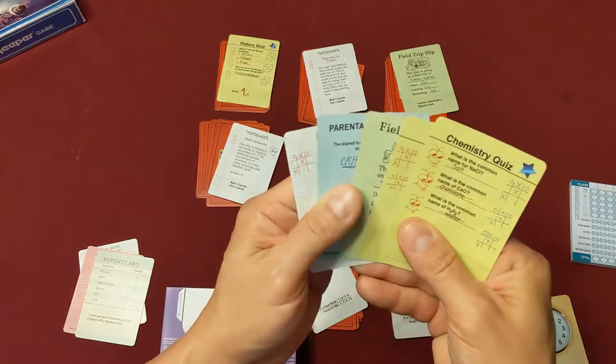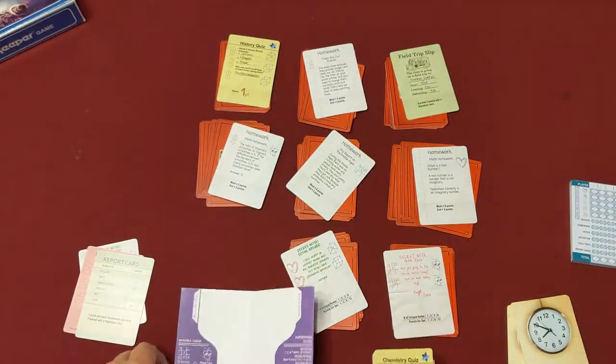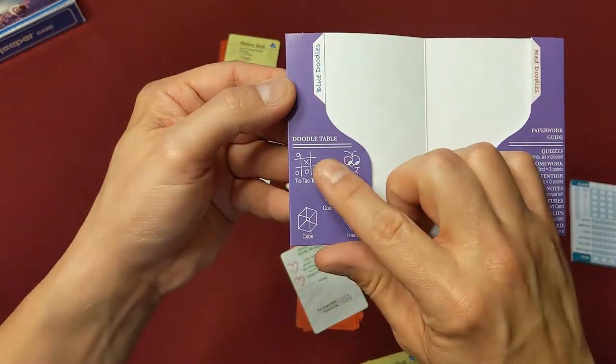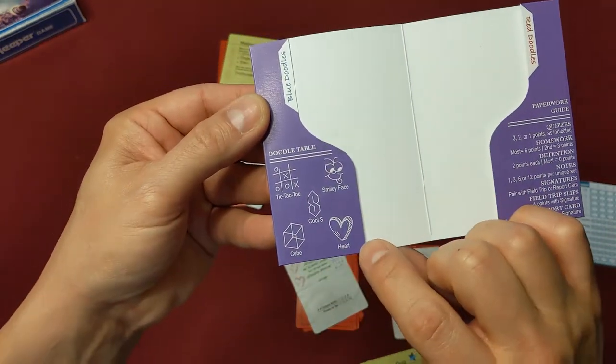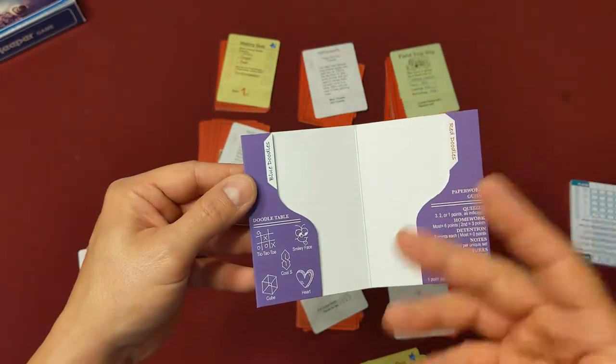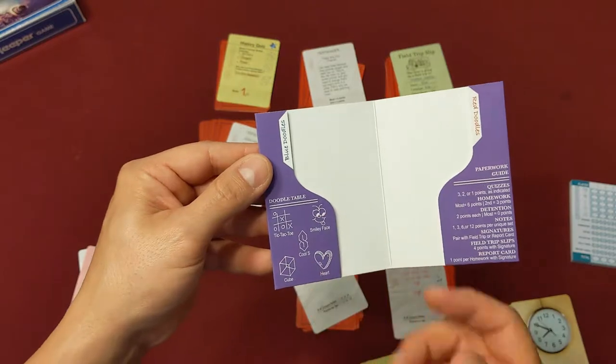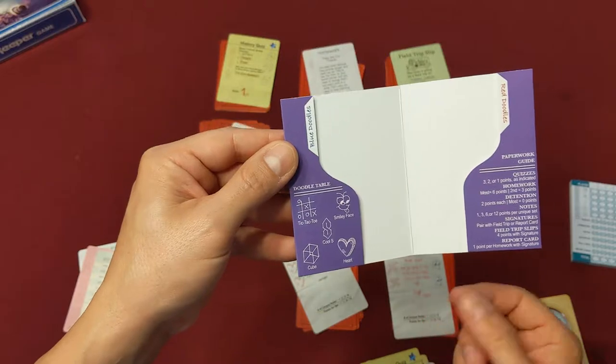And doodles are scored by whoever has the most of them. So for example, there's a smiley face here. There's five different doodles in the game shown right here: tic-tac-toe, smiley face, cool S, a cube, and a heart. If you have the most of any one of those, you're going to get five points. If you tie with someone you both get the five points. So collecting the same doodle and putting it on the right side so you show those doodles is important in this game to get points.